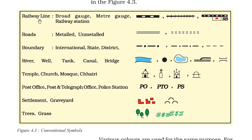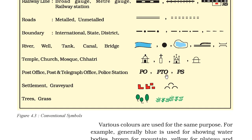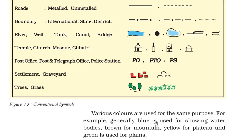Some conventional symbols are: for railway lines, a broad gauge has one symbol and a meter gauge another; a railway station is marked RS; a metalled road and unmetalled road have distinct symbols; international boundary, state boundary, and district boundary are marked differently. Other symbols include river, well, tank, canal, bridge, temple, church, mosque, and Chhatri. Post office is PO, post and telegraph office is PTO, and police station is PS. There are also symbols for settlements, graveyards, trees, and grass. Various colors are used: blue for water bodies, brown for mountains, yellow for plateaus, and green for plains.